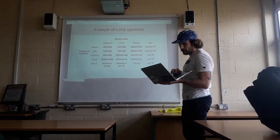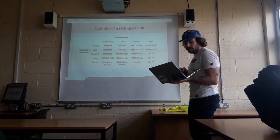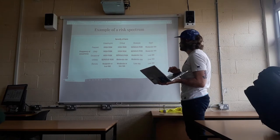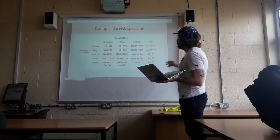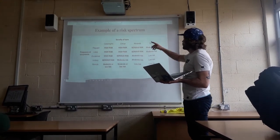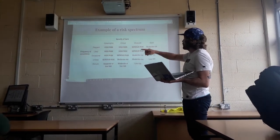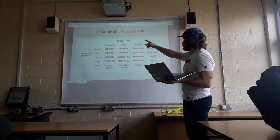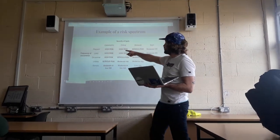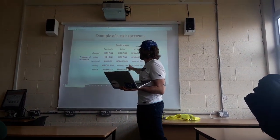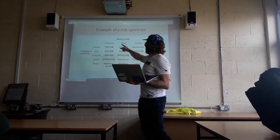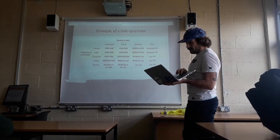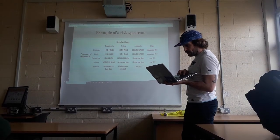This is an example of a risk spectrum. It shows the frequency of occurrence relative to the severity of harm on a scale system — ranging from frequent and likely, to remote chance, to catastrophic chance of something going wrong.